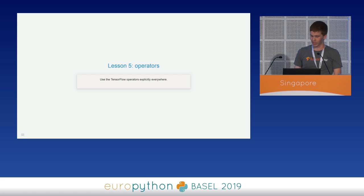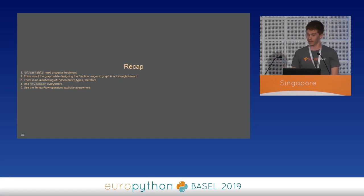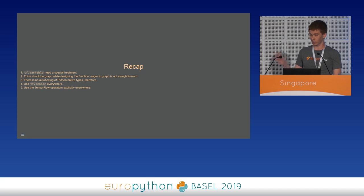We are reaching the end. This is a recap of the five points. Variables need special treatment — you have to think about the graph while designing the function. The conversion from eager to graph is not straightforward. There is no auto-boxing of Python native types to tf.Tensor, so we have to use tf.Tensor everywhere. And we also have to use TensorFlow operators explicitly everywhere.